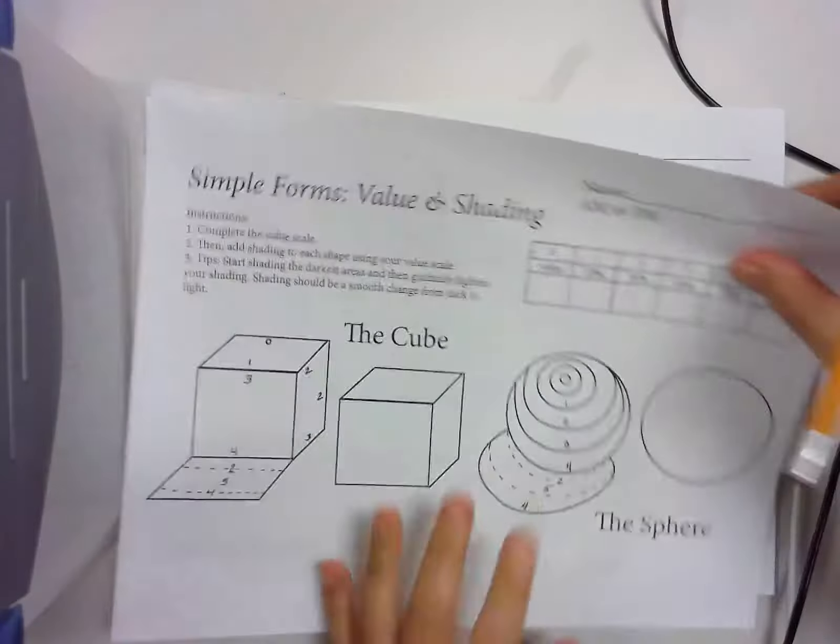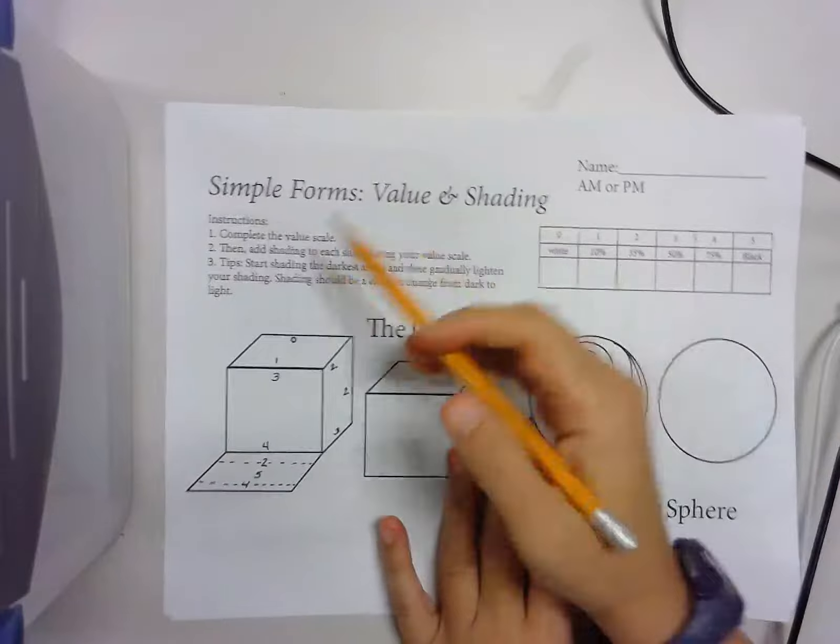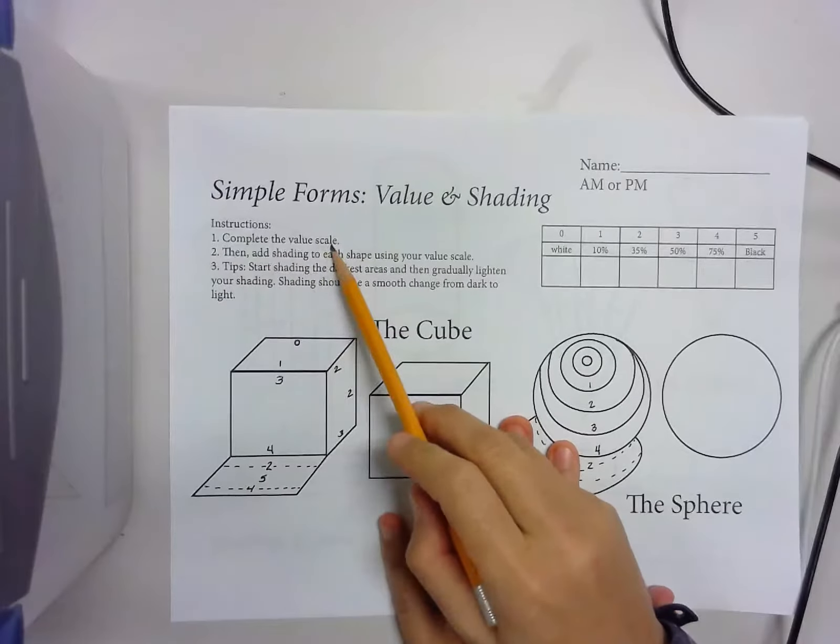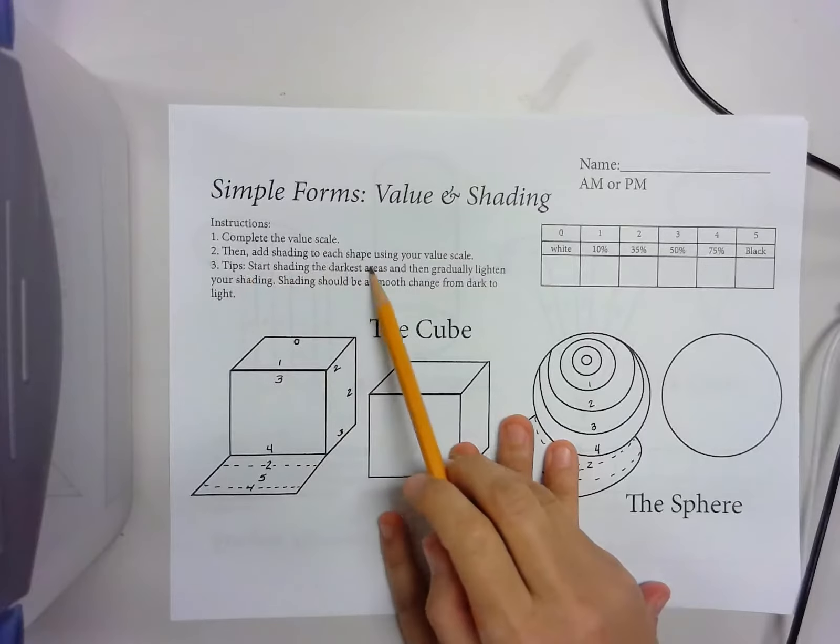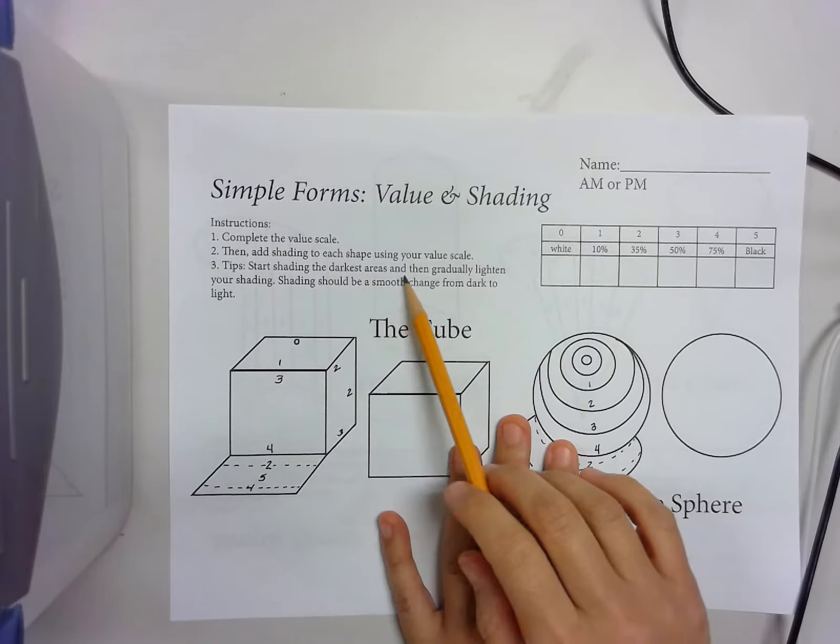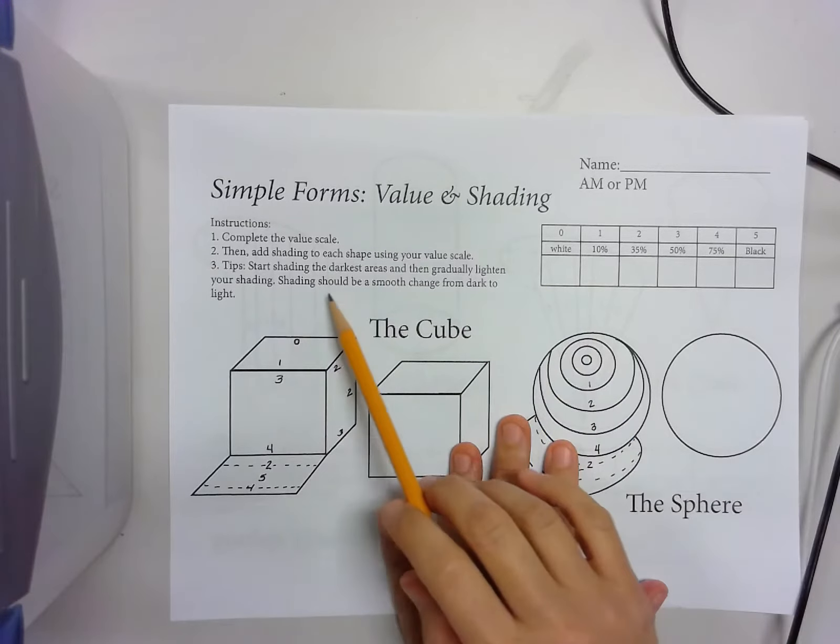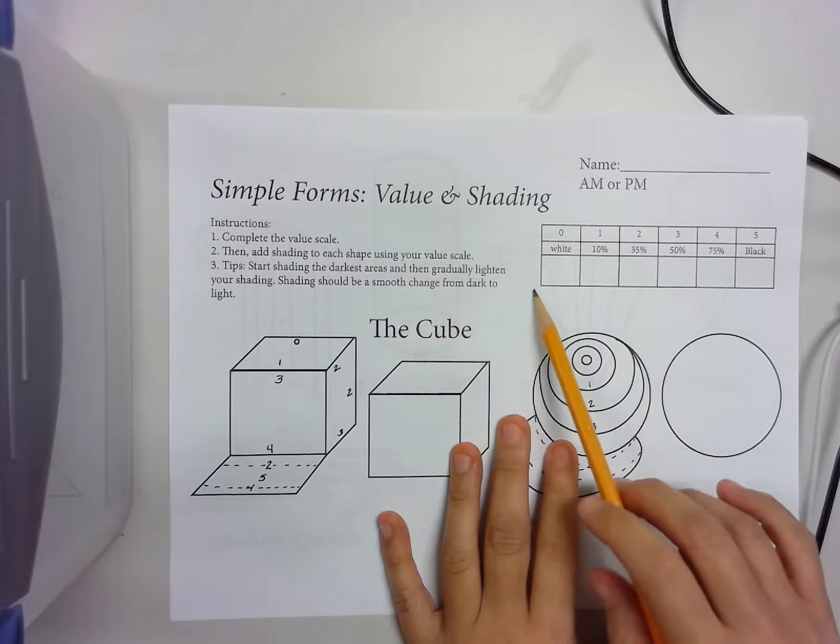As you can see, my finished example here. It says instructions: complete the value scale, then add shading to each shape using your value scale. Tips: start shading in the darkest areas and gradually lighten your shading. Shading should be a smooth change from dark to light.